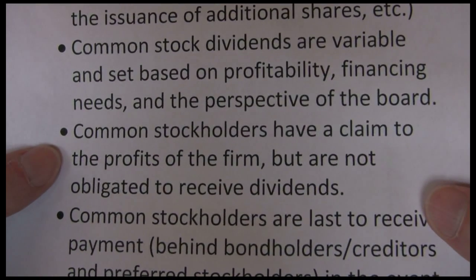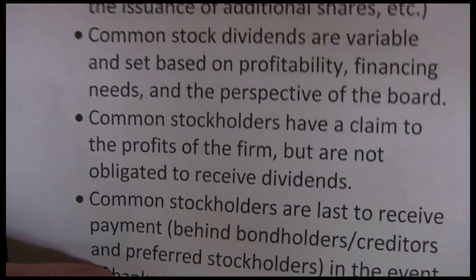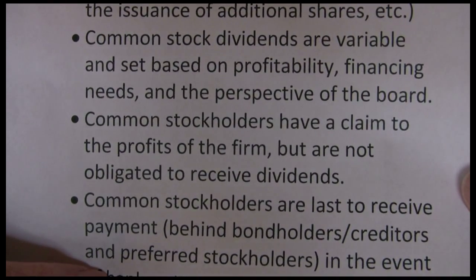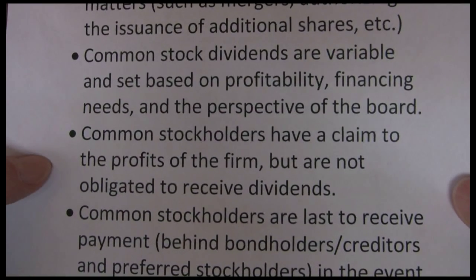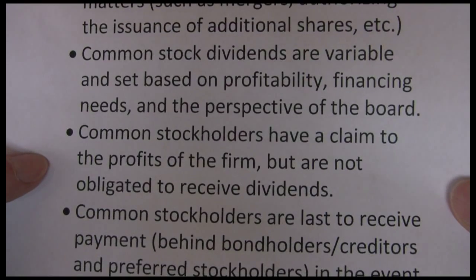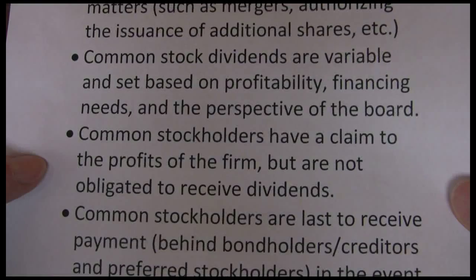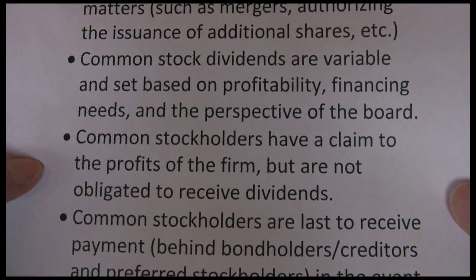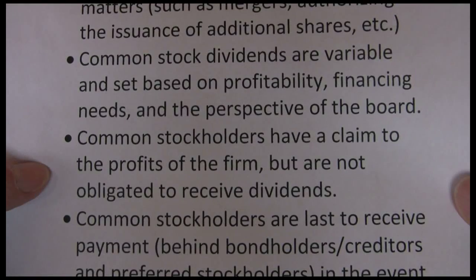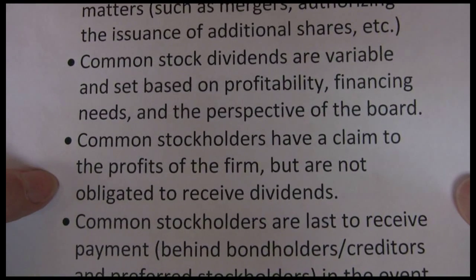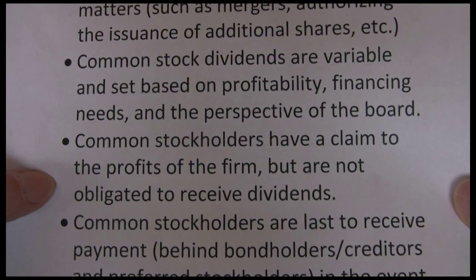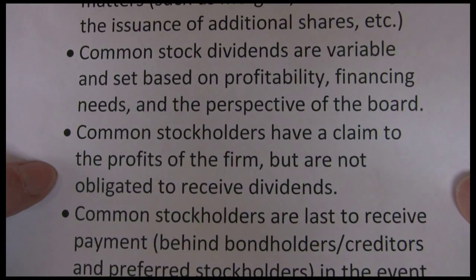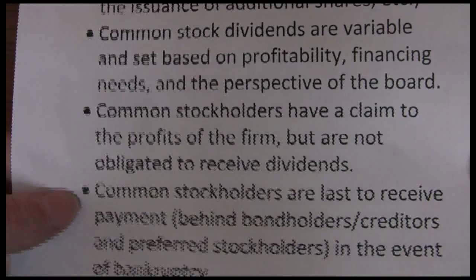Common stockholders have a claim to the profits of the firm, but are not obligated to receive dividends. As a common stockholder, you own the company, so you own the profits of the company. I own 40 shares of McDonald's, so when McDonald's makes money, I get a piece of that money — I have a claim against it. McDonald's, though, is not obligated to pay that out in dividends. They could decide it's in their interest to keep the money reinvested in expanding operations or developing new product lines. So I have a claim against the profits, but I don't have to receive those profits as dividends. Assuming the company is doing a good job managing its money, it will hopefully reinvest them profitably, so the value of my stock will increase over time.